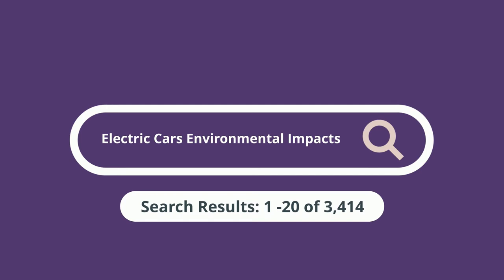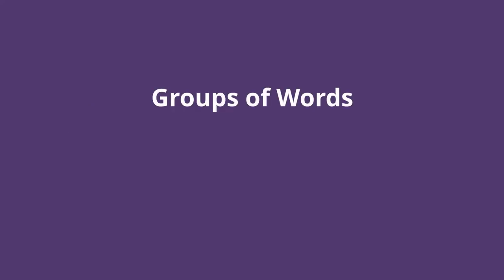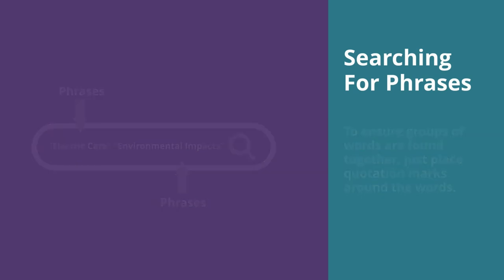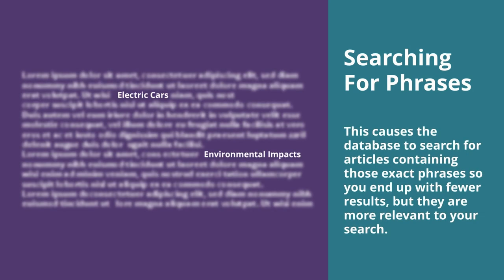To improve the relevance of your results, you may want the database to retrieve results that only contain certain groups of words together. These are called phrases. For example, 'electric cars' and 'environmental impacts' are both phrases. To ensure groups of words are found together, just place quotation marks around the words. This causes the database to search for articles containing those exact phrases.